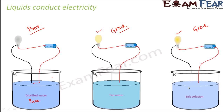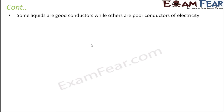So what do we observe from this? That yes, liquids do conduct electricity. But that does not mean that all liquids will conduct electricity in a similar way. Some of them will very easily conduct electricity. Some of them will be poor conductors — they will conduct electricity only under certain situations. Like here, if you look at the difference between tap water and salt solution, the bulb in case of salt solution is glowing more brightly. That's because tap water doesn't conduct electricity as properly — it doesn't conduct as much current. The more current reaches the bulb, the more glow there will be.